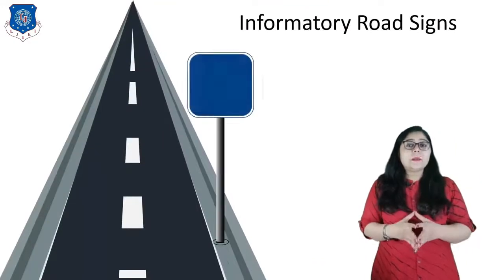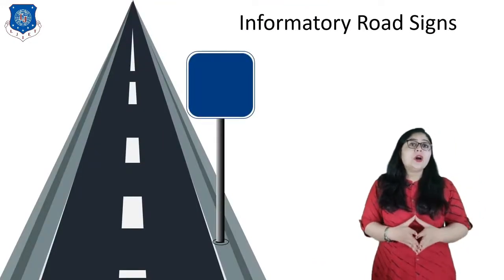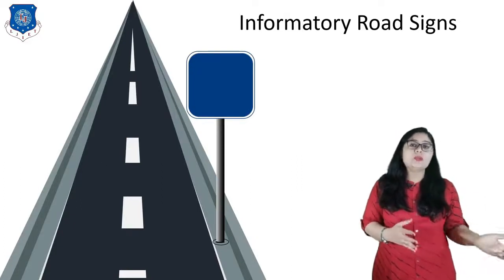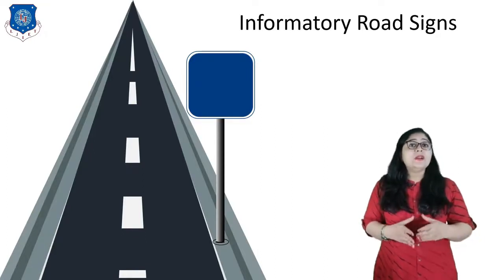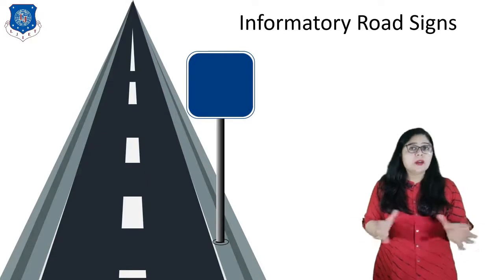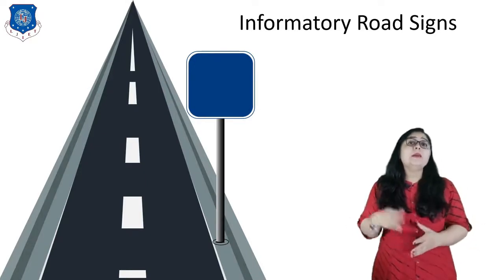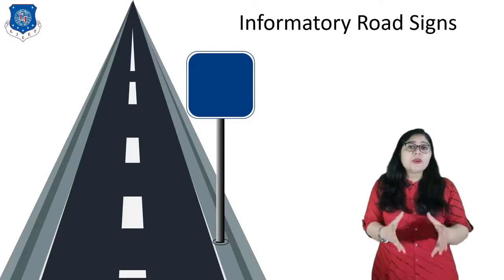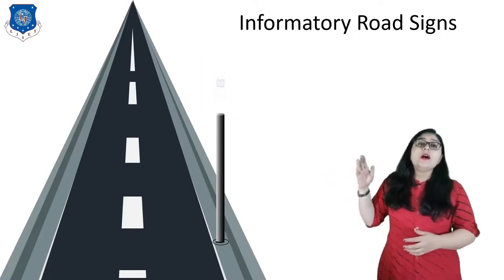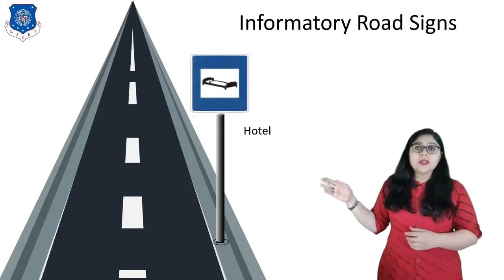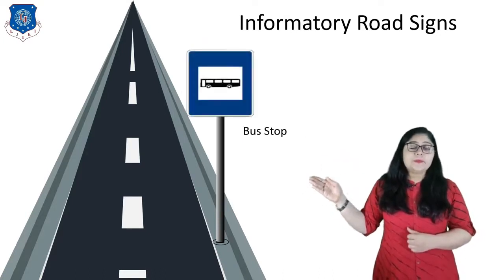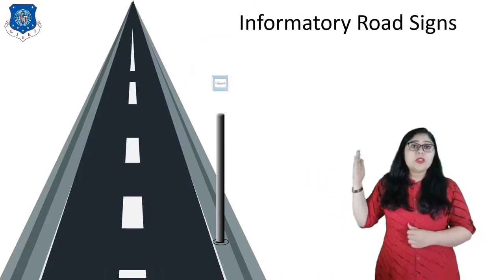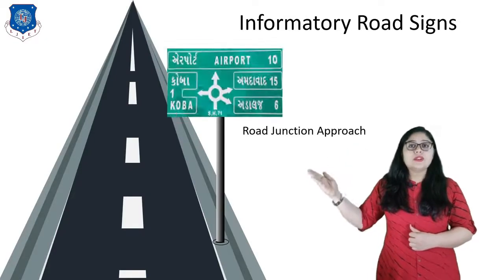Informatory road signs are meant to provide information on direction, destination, roadside facility, etc. to the road user. These signs help a driver in saving time reaching a destination while looking around. These signs are normally blue in color. Different types of informatory signs include filling station, restaurant, hotel, parking, first aid post, refreshment, hospital, bus stop, road marker sign, and road junction approach.